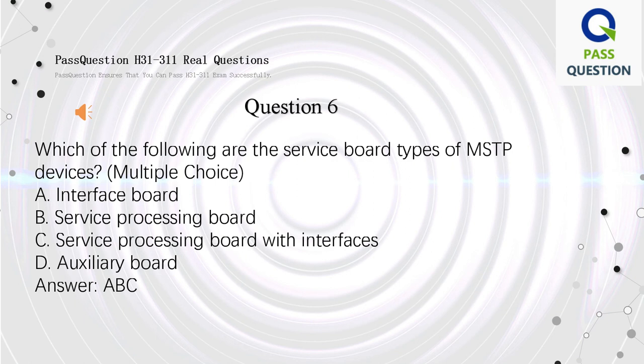Question 6. Which of the following are the service board types of MSTP devices? Multiple choice. A. Interface board. B. Service processing board. C. Service processing board with interfaces. D. Auxiliary board. Answer: A, B, C.